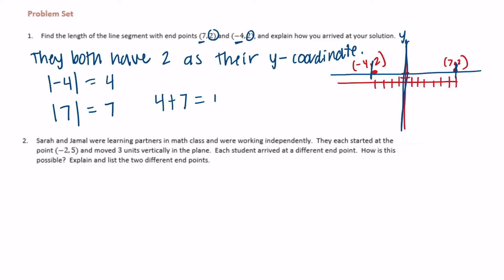Four plus seven is eleven, so the length of the line segment would be eleven units. The line segment going from (-4, 2) to (7, 2) — that purple line segment — is eleven units long.